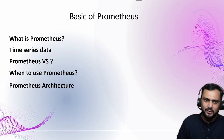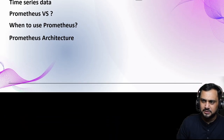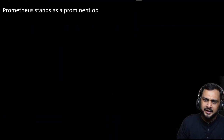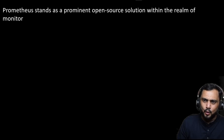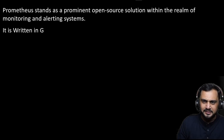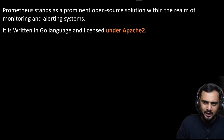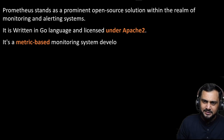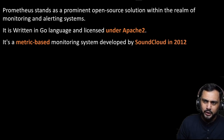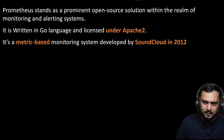Prometheus stands as a prominent open source solution within the realm of monitoring and alerting systems. It is written in Go language and licensed under Apache 2. It is a metric-based monitoring system developed by SoundCloud in 2012. I will explain in detail what is a time series monitoring system.